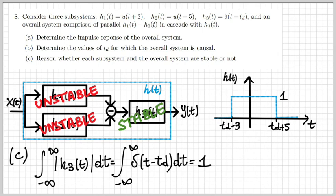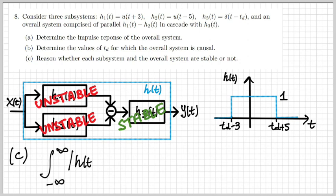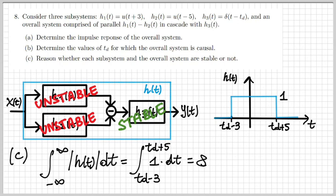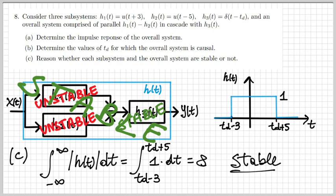What about the overall system? We calculate the integral of |h(t)| dt. Since h(t) is the rectangular signal shown on the right of the slide, this integral is simply the area of that rectangular signal, which equals 8. Since 8 is finite for whatever value of td, we conclude that the overall system is stable.